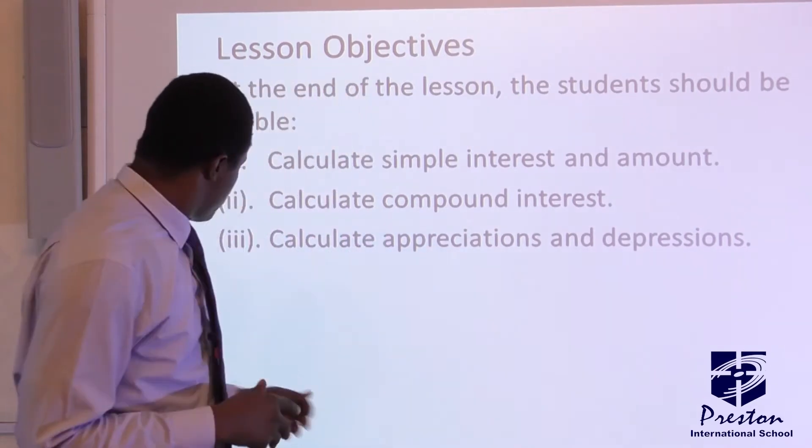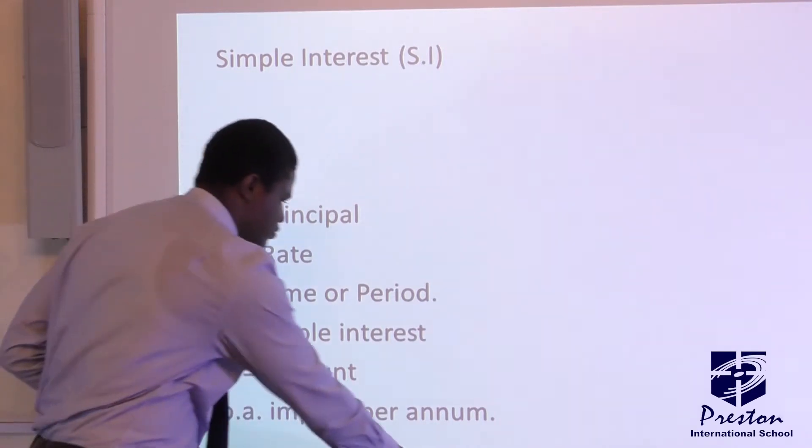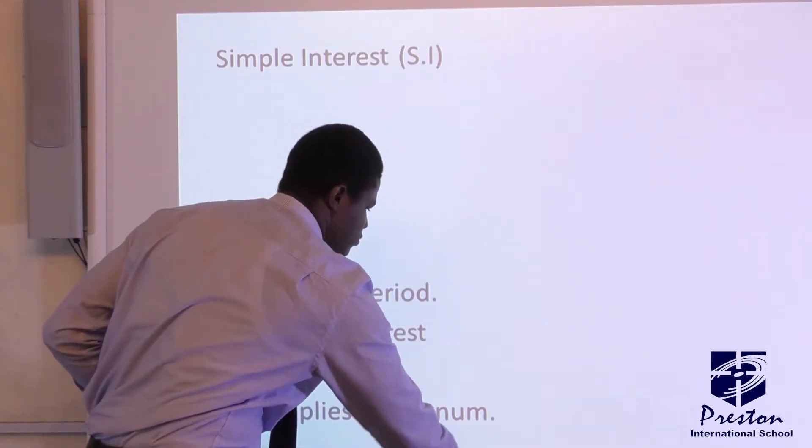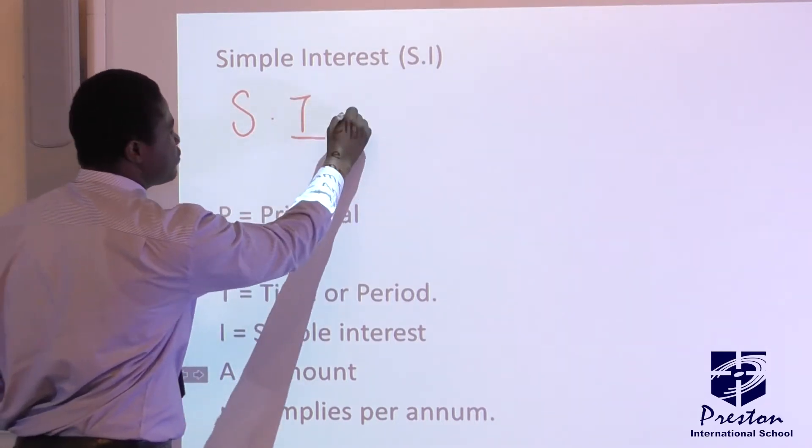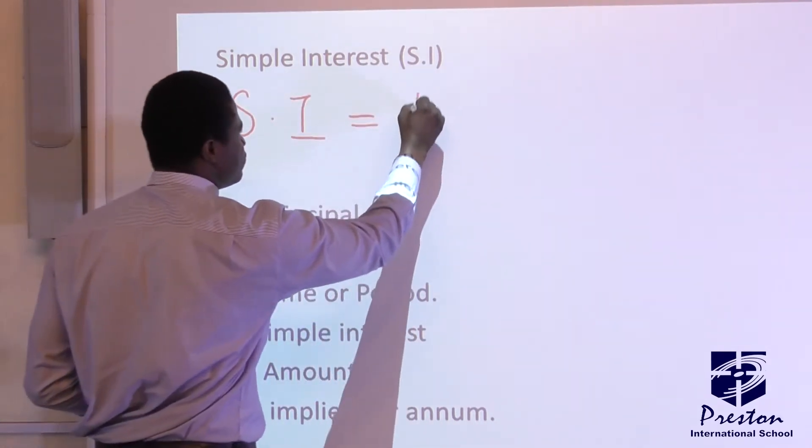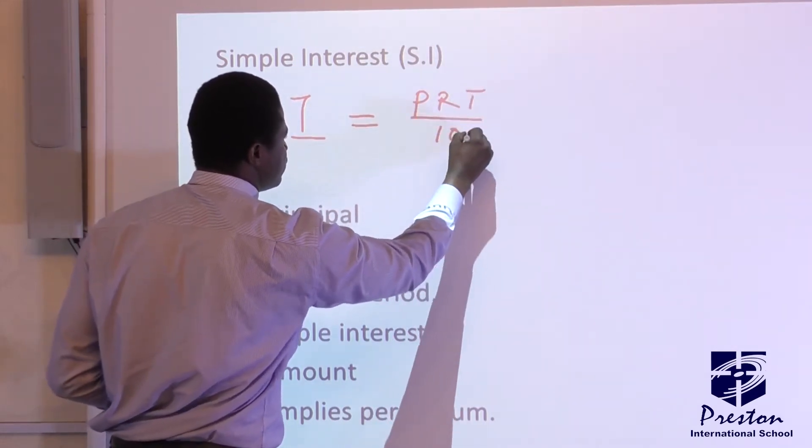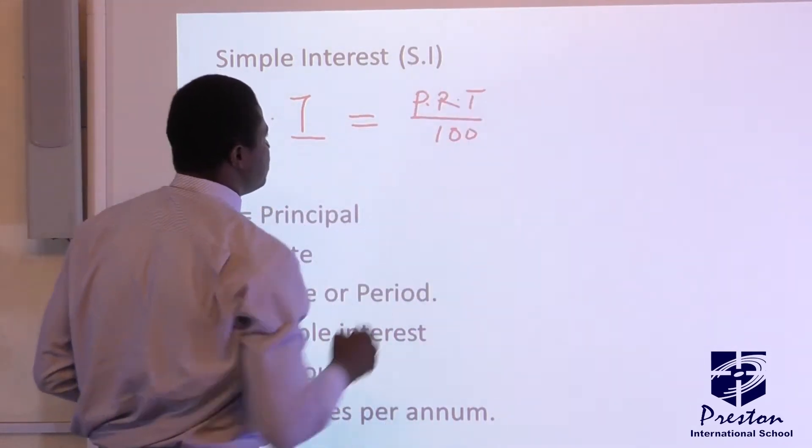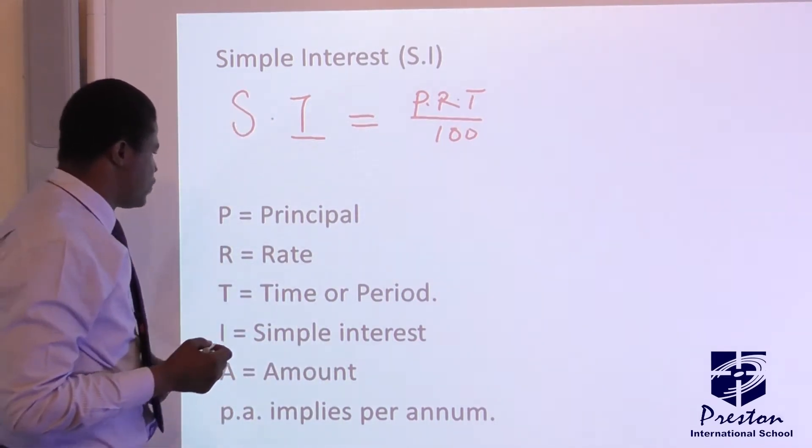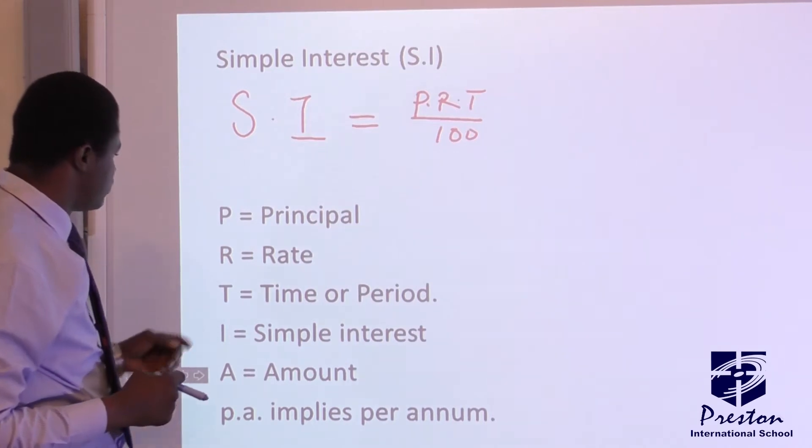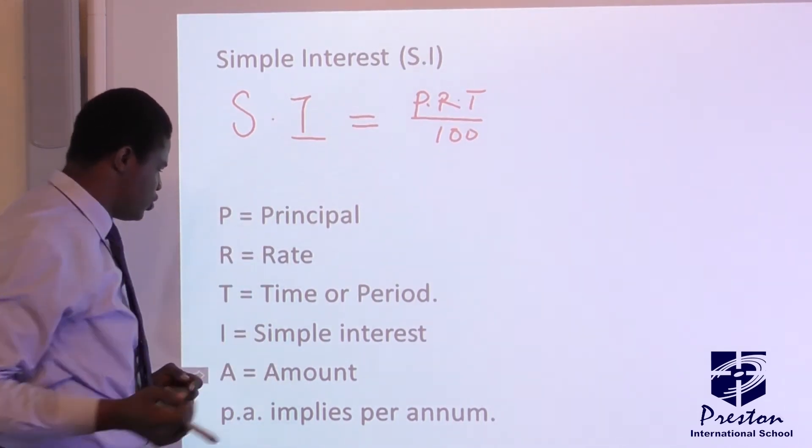So now let us pick it from simple interest. Generally, when we are talking about simple interest, we have PRT over 100. That is principal times rate times time involved. P is for principal, R for rate, T for time and period. Then the high simple interest.